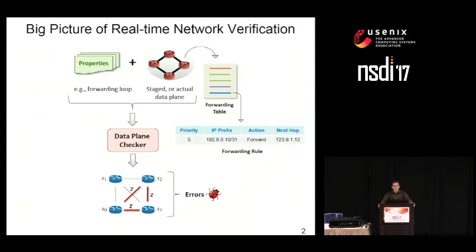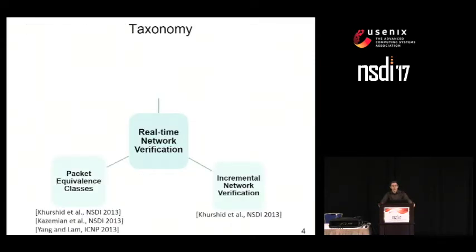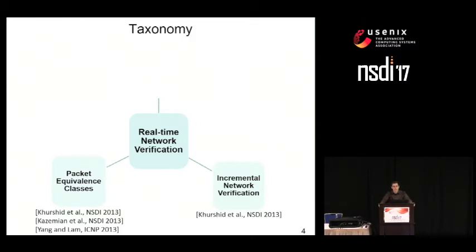To achieve this, current techniques exploit at least two characteristics of the problem. First, most state-of-the-art data plane checkers partition the set of packets according to their forwarding behavior — packets belong to the same equivalence class whenever they experience the same forwarding behavior in the network. Second, real-time network verification can be made incremental so that only changes between two data plane snapshots are analyzed, as opposed to the entire network each time. A notable work performing such incremental network verification is Veriflow, published at NSDI 2013 by Kirshnet et al.